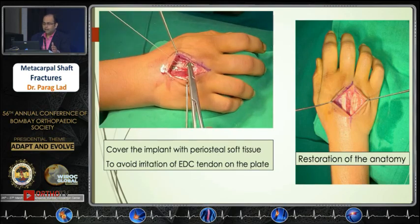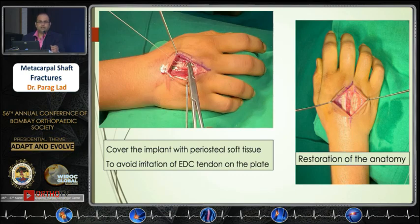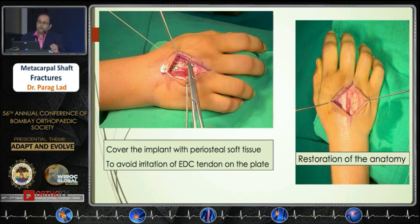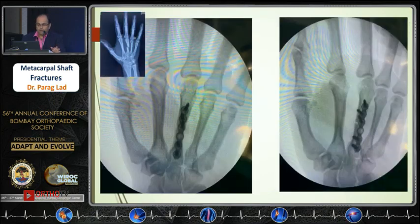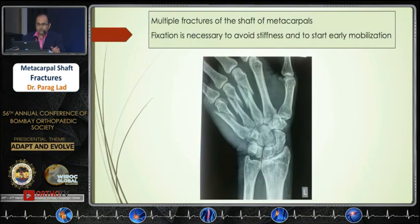The implants should not be in direct contact with the tendons, because direct contact can cause attrition rupture or weakness causing extension lag. Once you restore and cover the periosteal layer, restoration of anatomy is almost near normal. This is how the post-op X-ray looks.